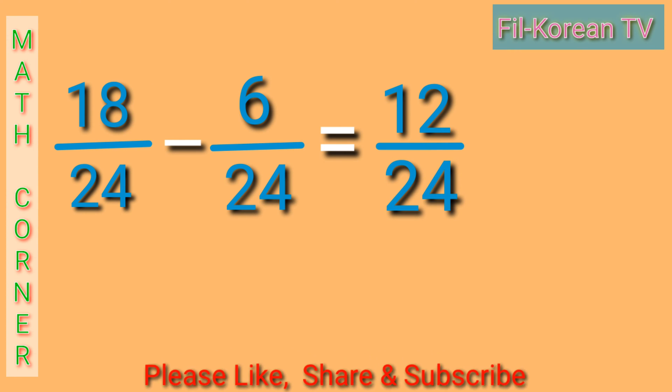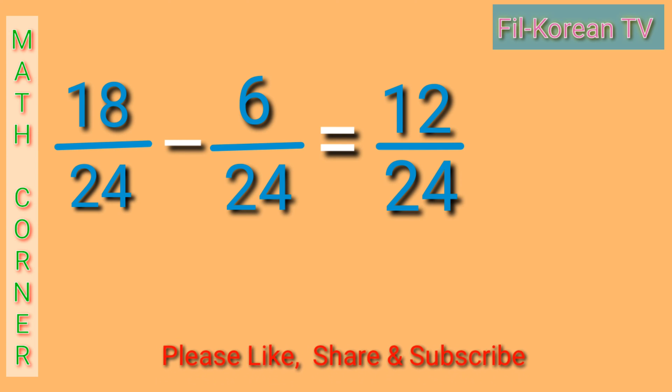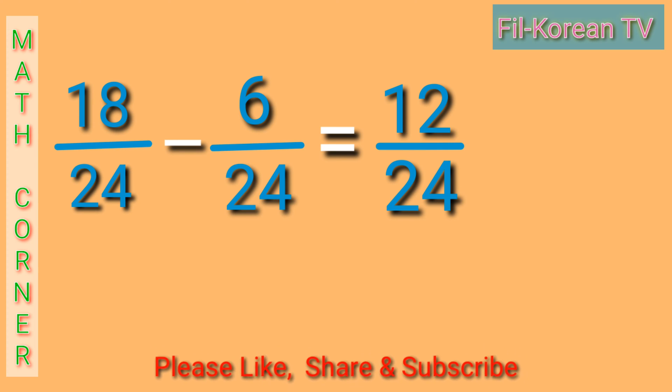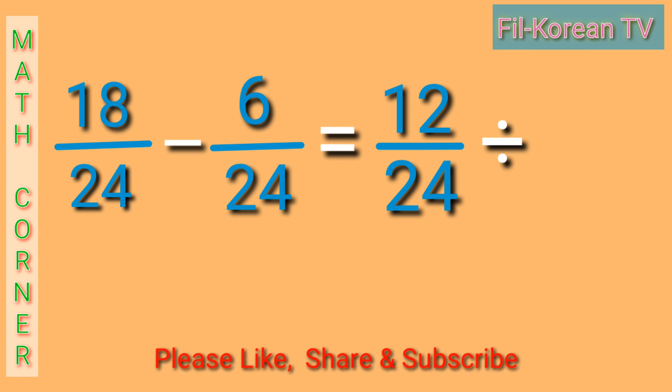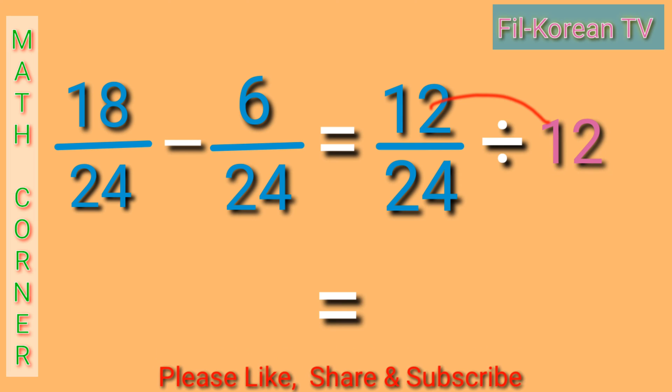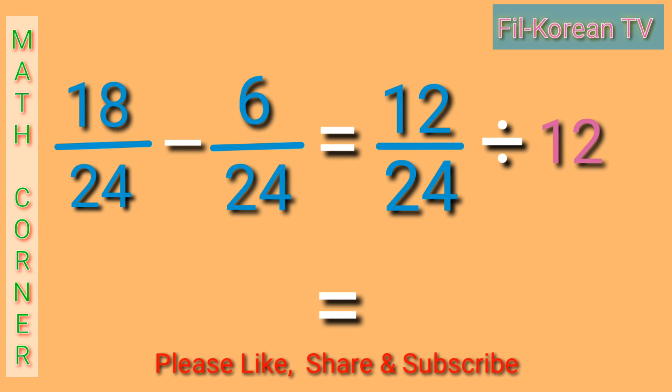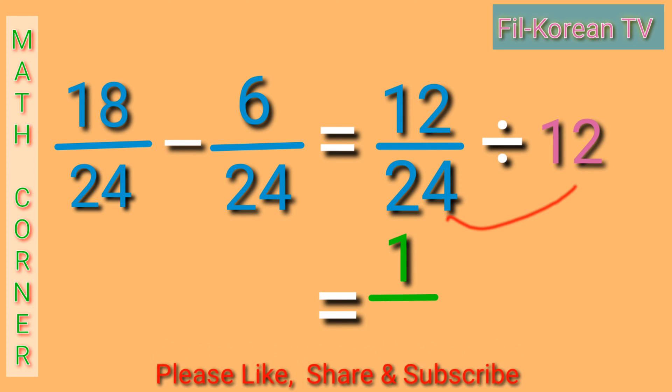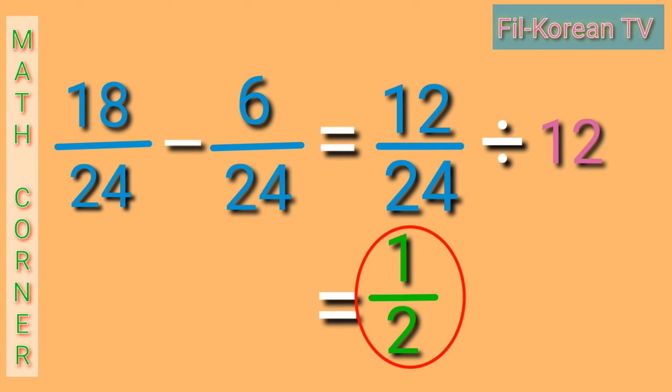The answer, 12 twenty-fourths, can be reduced to lowest term because 12 and 24 have common factors. So, we will divide them by their GCF, which is 12. 12 divided by 12 equals 1. 24 divided by 12 equals 2. The answer is one-half.